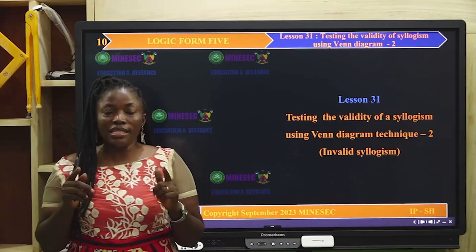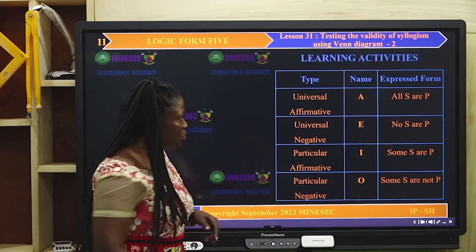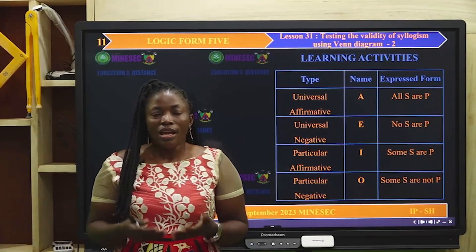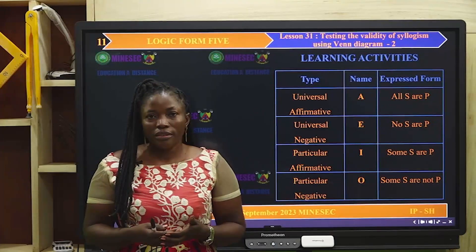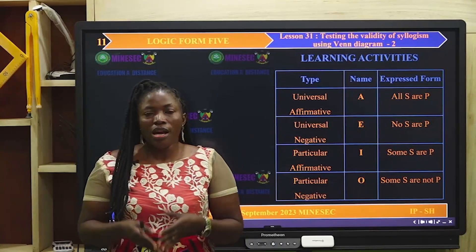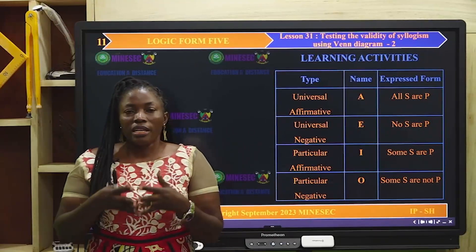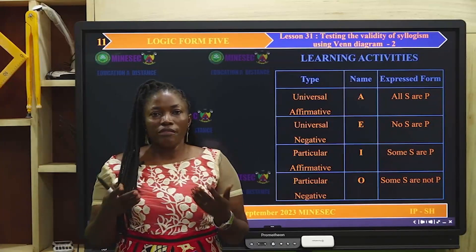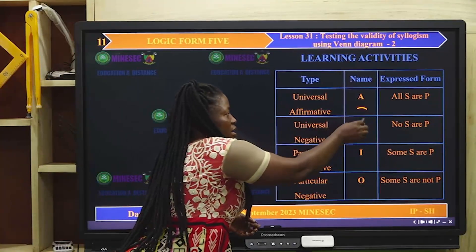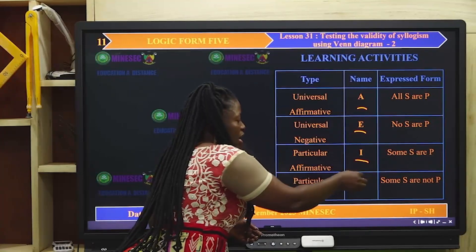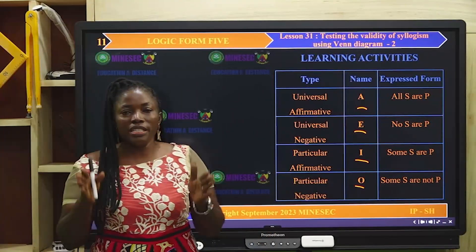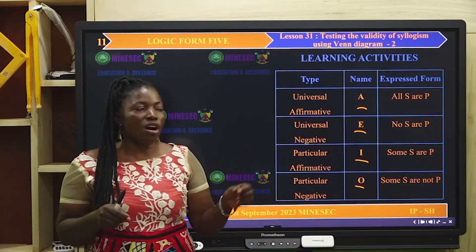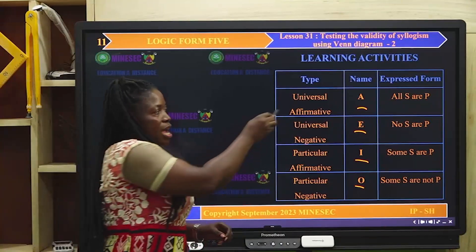Remember that this is a Form 5 lesson. In order to be able to test an argument correctly, every argument contains three propositions — propositions carefully selected by Aristotle. He used the vowels A, E, I and O. Each argument must contain any of these three propositions.